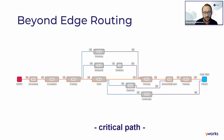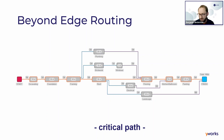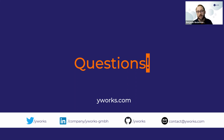Another possibility is critical paths — routing not just a single edge but an entire path, perhaps by aligning nodes, to emphasize one important path in your layout while other edges are routed differently. The hierarchical layout supports this feature.